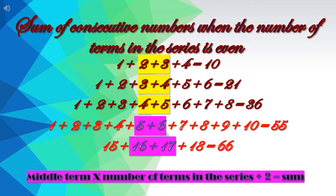In the second series the number of terms is 6 and the middle term is 3 plus 4, which equals 7. We divide 6 by 2 to get 3, so the middle term 7 is multiplied by 3, giving 21. In the third series we have taken the first 8 numbers. The middle term is 4 plus 5, which equals 9. We divide 8 by 2 to get 4, so 9 multiplied by 4 is equal to 36.